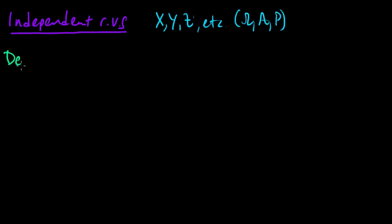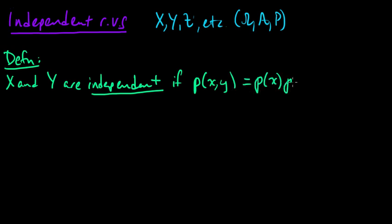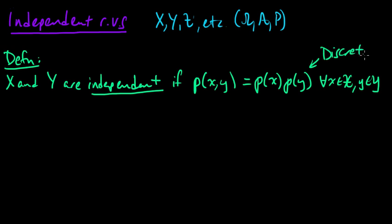Here's the definition. x and y are independent if, in the discrete case, the joint PMF of x and y equals the marginal of x times the marginal of y, for all x that the random variable x could take, and all y's that y could take. This is the discrete case.